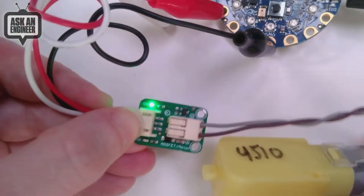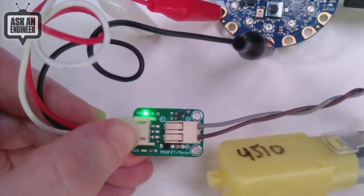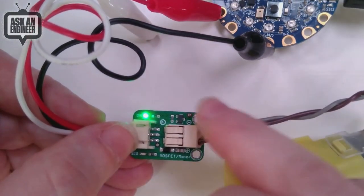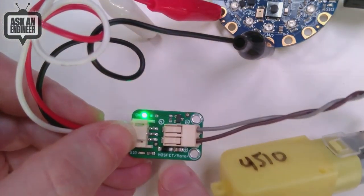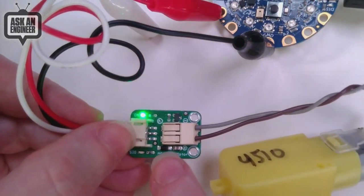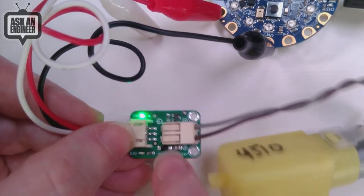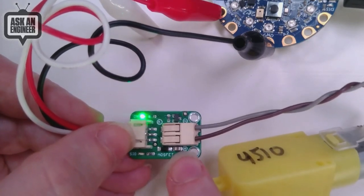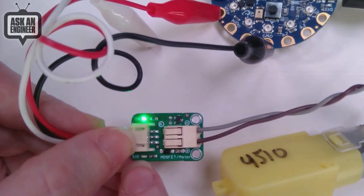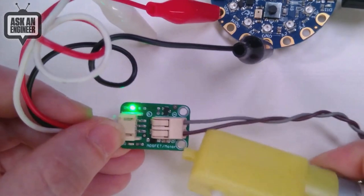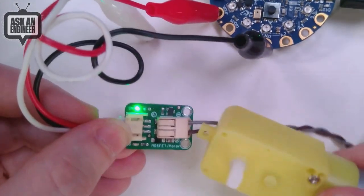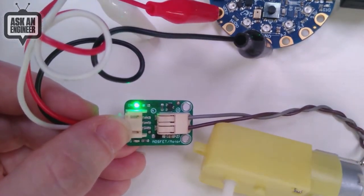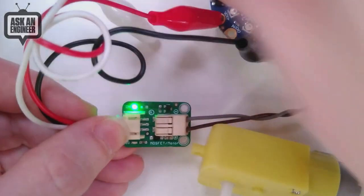This is a little MOSFET driver with a four-amp power transistor N-channel, a Schottky diode for flyback control, capacitor, power LED, and indicator LED. It's for fans or simple unidirectional motors and solenoid control.